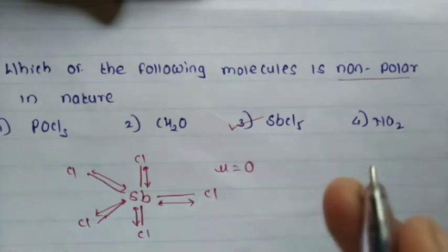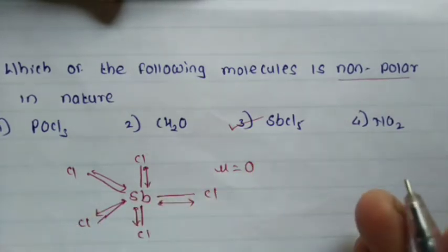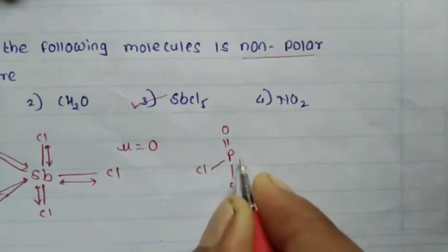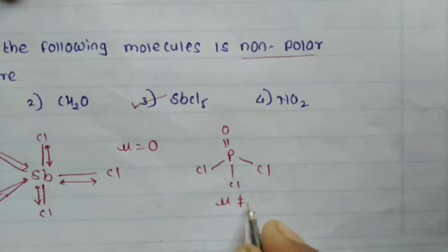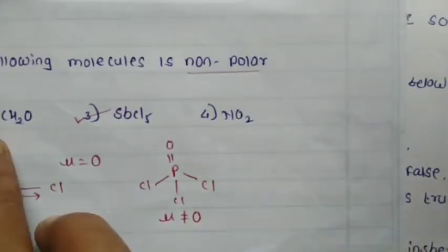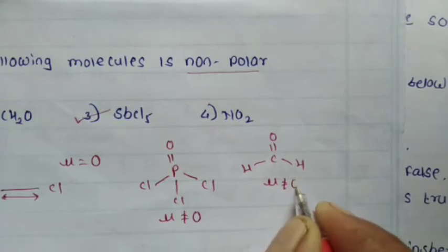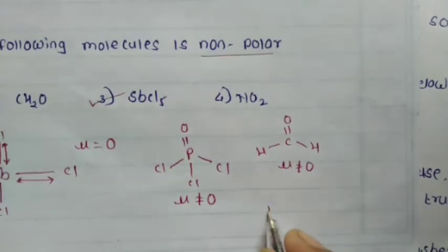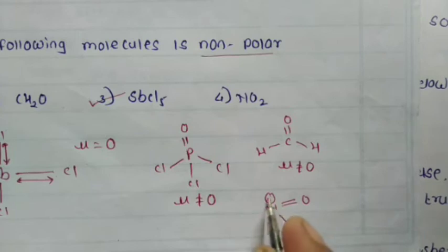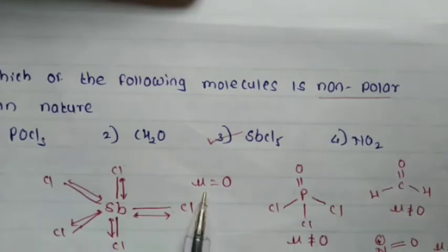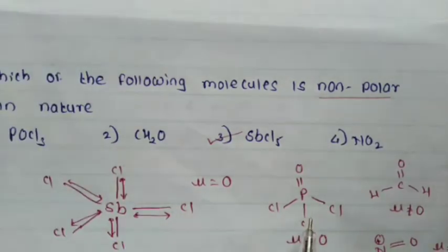The other molecules are polar. POCl₃ has phosphorus with double bond oxygen and three Cl atoms — dipole moments do not cancel, giving a net dipole moment. CH₂O (formaldehyde) also has dipole moments that do not cancel. NO₂ likewise shows net dipole moment. SbCl₅ is non-polar because all dipole moments cancel giving zero net dipole moment.